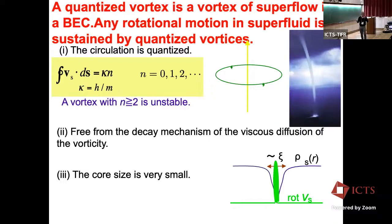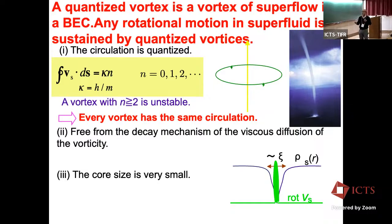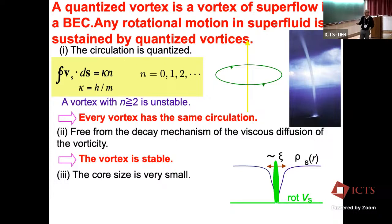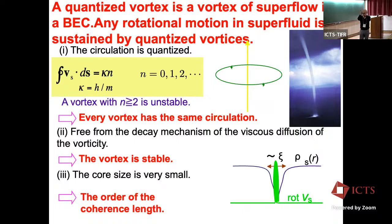A quantized vortex appears as a vortex of inviscid superflow in a BEC. Any rotational motion in a superfluid is sustained by quantized vortices. These have characteristics different from usual vortices. First, the circulation is quantized by the quantum circulation kappa, and a vortex of quantum number larger than two is unstable. So actually every vortex has exactly the same circulation. Second, this is a vortex of inviscid superflow, free from the usual decay mechanism of viscous dissipation. Third, the vortex core size is very small, of the order of the coherence length.